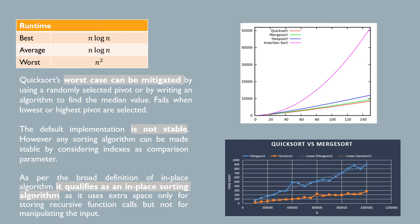If Quicksort's worst implementation is n squared, why would you use it over MergeSort?